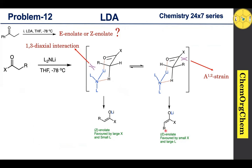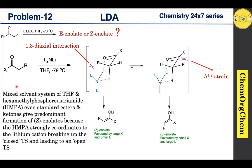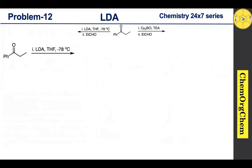Apart from changing the substituents, we can switch the selectivity from E-enolate to Z-enolate just by changing the solvent. When you use a mixed solvent system with HMPA, it preferentially produces E-enolate as the major form, since HMPA strongly coordinates with the lithium cation, breaking up the closed transition state into an open transition state, which readily produces E-enolate.